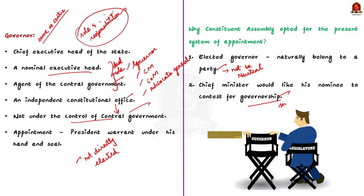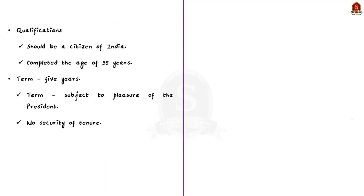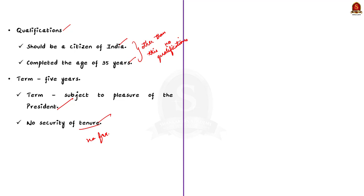Additionally, the chief minister of the state might prefer his nominee for governorship, leading to a second-rate party member being elected. Direct election of the governor might also create serious problems of leadership at the time of general elections. The constitution lays down only two qualifications for appointment as governor: he should be a citizen of India and should have completed the age of 35 years. The governor holds office for a term of 5 years, but this is subject to the pleasure of the president — the governor has no security of tenure and may be removed at any time.